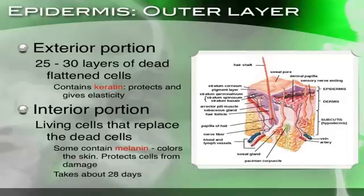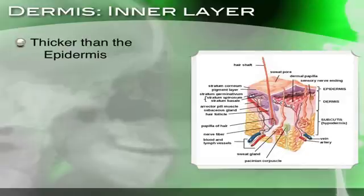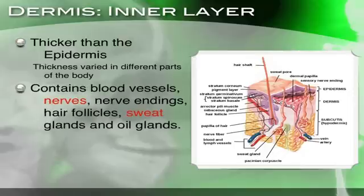So that process takes 28 days and we replace the dead cells on the surface. Now let's talk about the dermis, because the dermis has a lot. The dermis is thicker than the epidermis, and the thickness varies in different parts of the body — for example, the skin on the bottom of your feet is thicker because it takes all the pressure from walking. The dermis contains blood vessels, nerves, nerve endings, hair follicles, sweat glands, and oil glands.